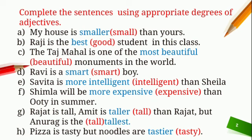Last sentence: Pizza is tasty. But noodles are dash tasty. Pizza and noodles — two eatables. So 'tastier' will come, and the spelling is T-A-S-T-I-E-R.